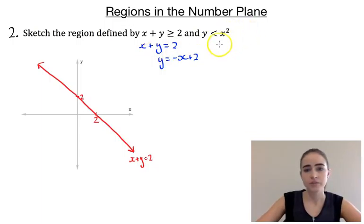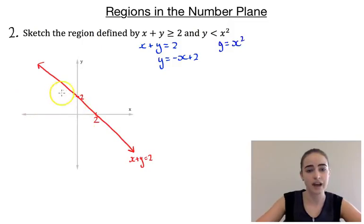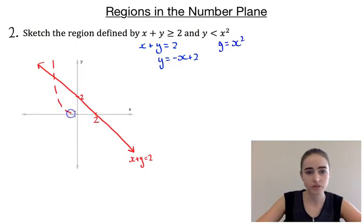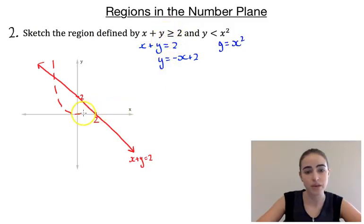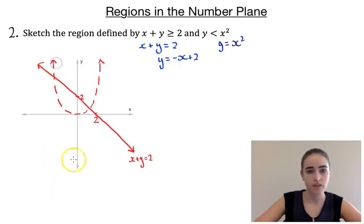Our next curve: we treat y < x² as y = x², which is a parabola with the vertex at the origin. We draw this one with a dotted line because the inequality is a less than symbol, whereas the straight line was drawn as a solid line because it was a greater than or equal to symbol.